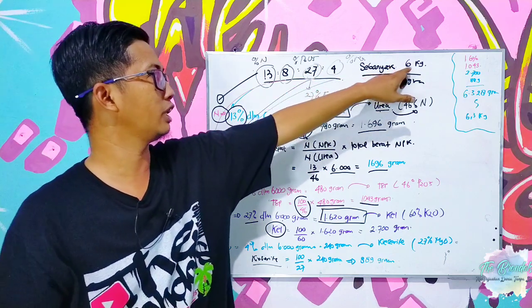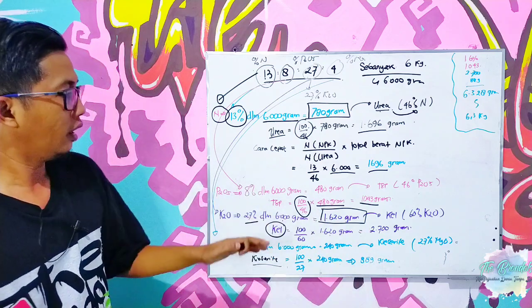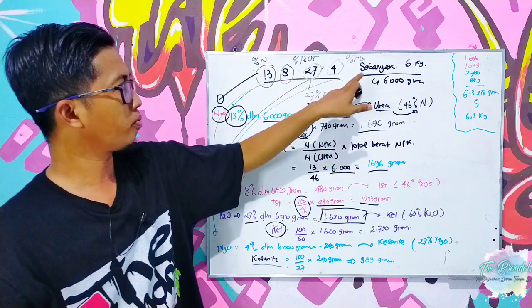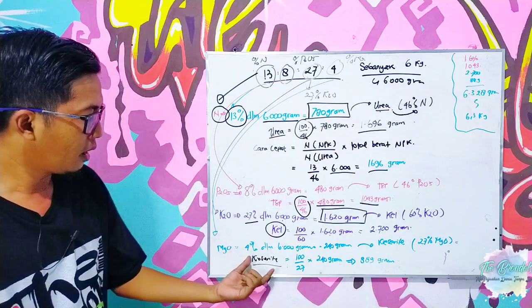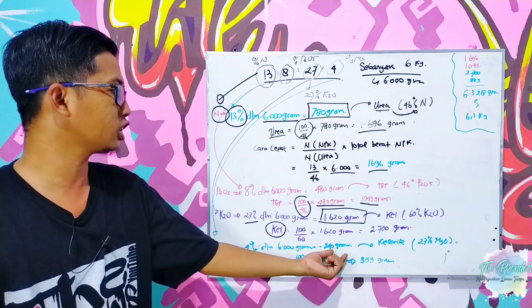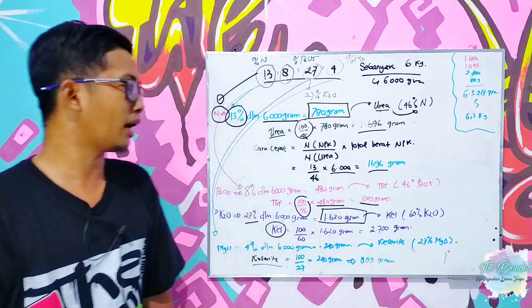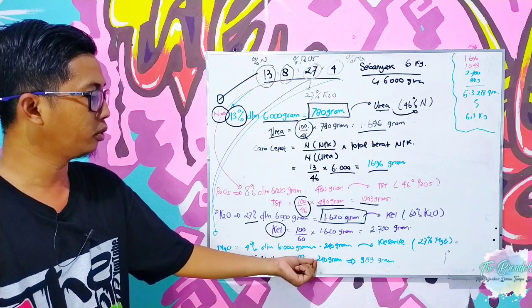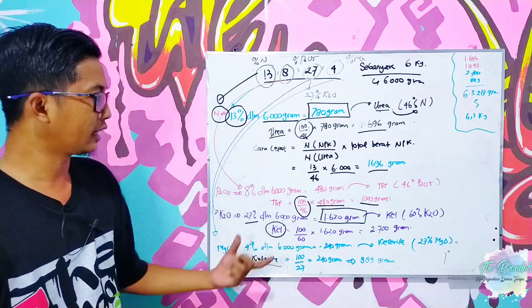Kemudian magnesium oksidanya sebanyak 4 persen ini dalam NPK 13-8-27-4 selama sebanyak 6000 gram, maka kita membutuhkan 240 gram magnesium oksida. Kalau kita ganti dengan menggunakan kiserit yang 27 persen magnesium oksida, maka perhitungannya adalah 100 per 27 kali 240 gram sama dengan 889 gram.